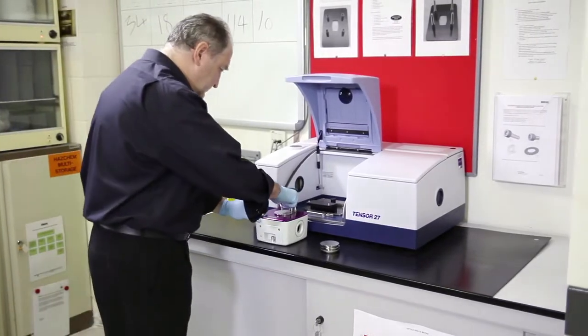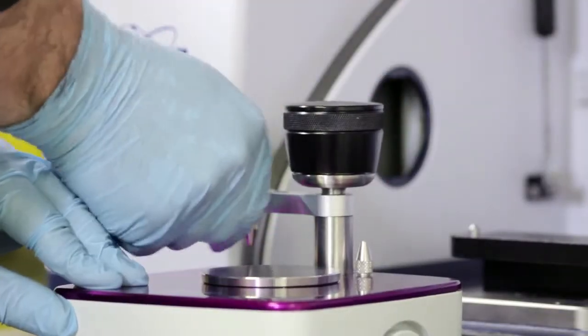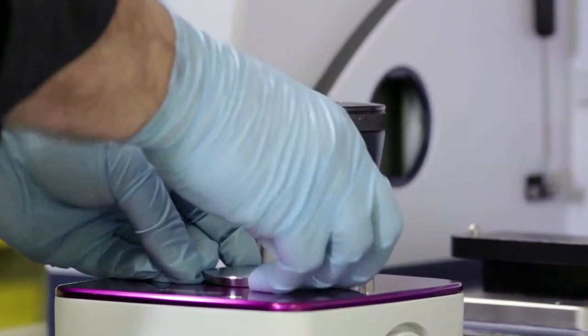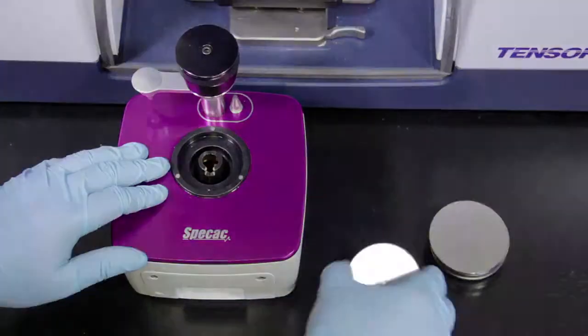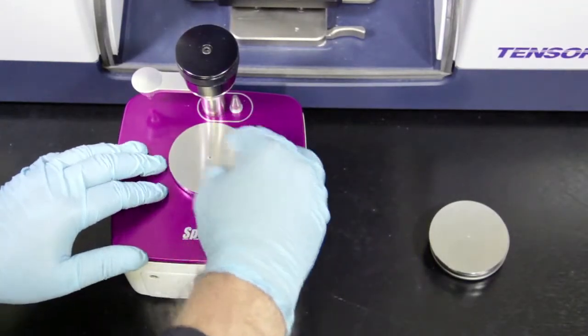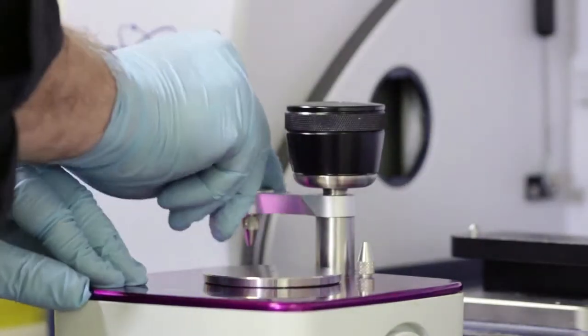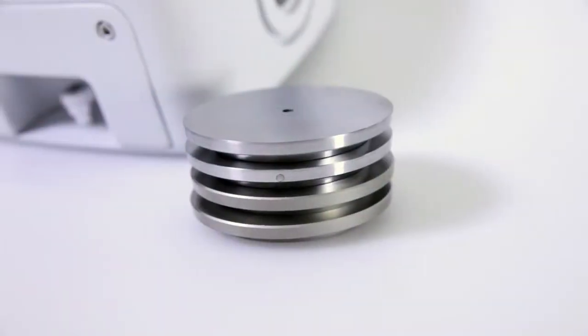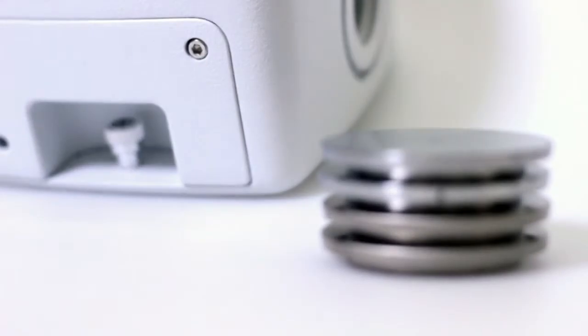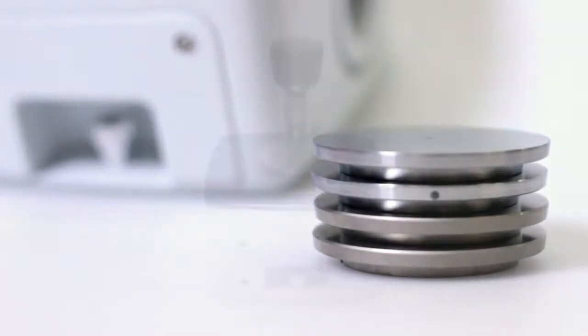Interchangeable ATR crystal pucks easily fit upon the optical unit and are magnetically held in place. A choice of four crystal pucks are available for the Quest, including two configurations of strong and durable monolithic type 3A diamonds, a zinc selenide and germanium crystal option.